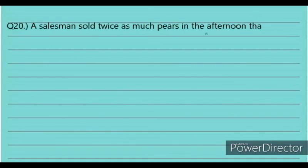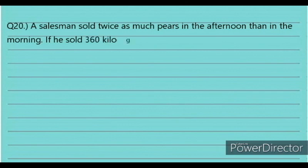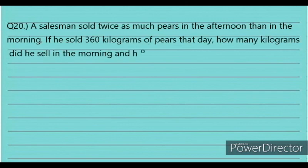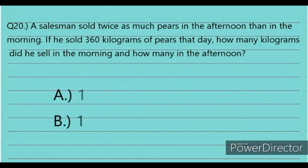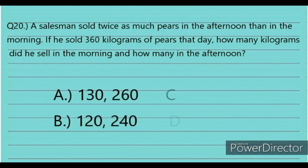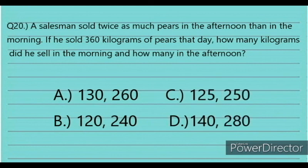Question 20. A salesman sold twice as much pears in the afternoon as in the morning. If he sold 360 kg of pears that day, how many kg did he sell in the morning and how many in the afternoon? Answer choices: A. 130 and 260, B. 120 and 240, C. 125 and 250, D. 140 and 280.